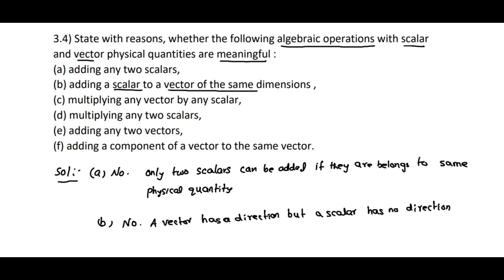For example, if you are taking speed and velocity — velocity is a vector, speed is a scalar. These two can't be added. That's why the answer is no.